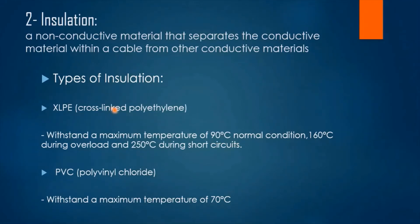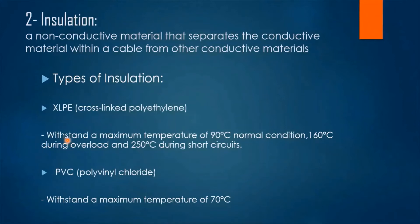The second layer of the cable is the insulation layer — a non-conductive material that separates conductors from each other and from other conductive materials. We have two types of insulation: XLPE (cross-linked polyethylene) and PVC (polyvinyl chloride). XLPE can withstand much higher temperatures than PVC — up to 90°C under normal conditions, 160°C during overload, and 250°C during short circuits.